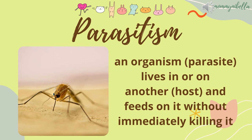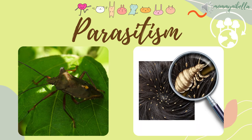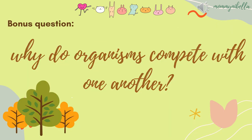Parasitism is a relationship wherein an organism, the parasite, lives in or on another host and feeds on it without immediately killing it. In short, one organism is benefited and the other is harmed. Examples of parasites here are the insect and the lice; the hosts are the leaf and the human. Remember: in parasitism, one organism is benefited and the other is harmed. For our bonus question: why do organisms compete with one another?